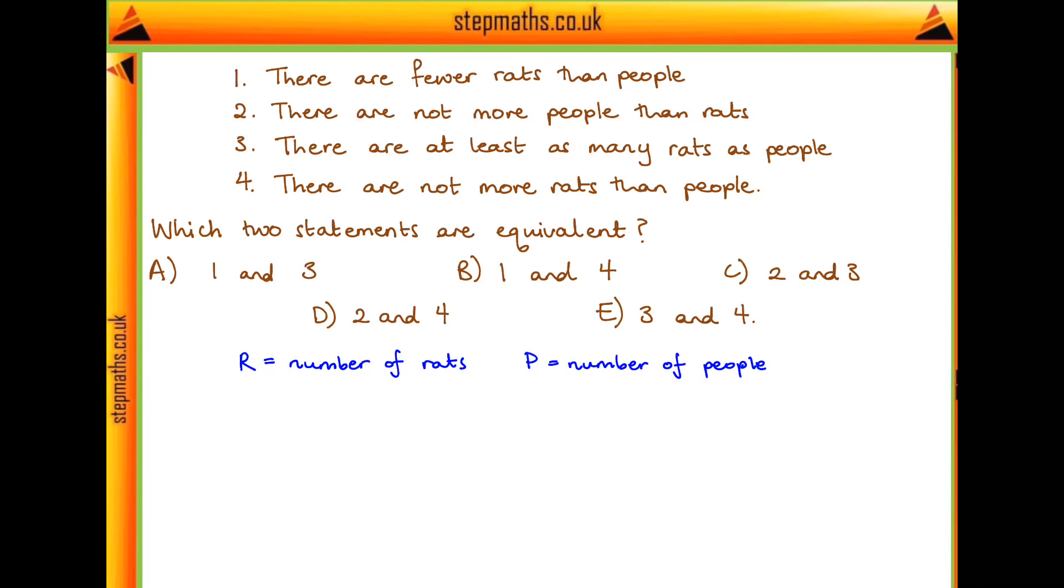then how can we write this first statement as an inequality? So if we're saying there are fewer rats than people, then the number of rats is going to be less than the number of people.